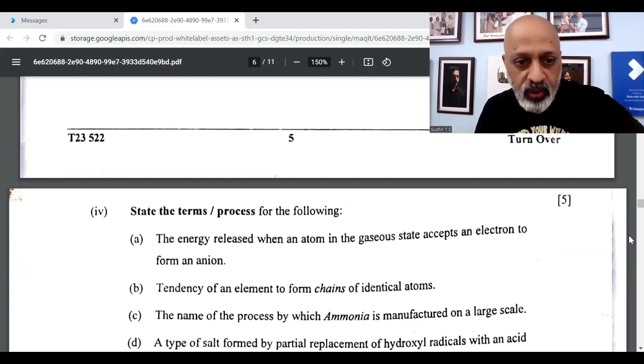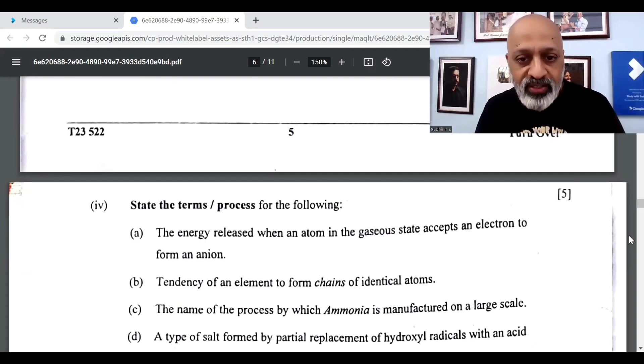The 4th question. The energy released when an atom is in the gaseous state, you need to state the term or the process. Electron affinity. The second one is catenation.